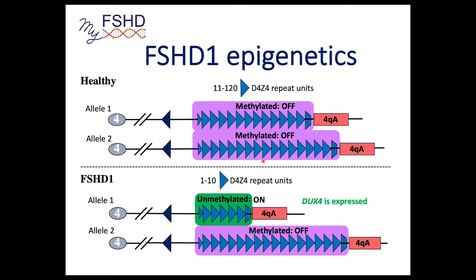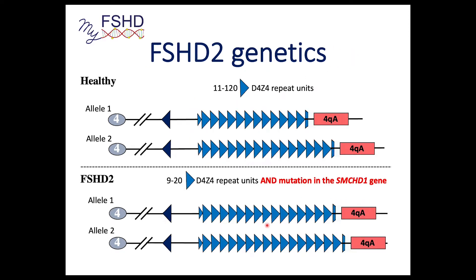These repeats are recognized by the cell as an off switch. In healthy individuals with more than 10 repeats, both chromosomes — remember you have one chromosome 4 from mom and one from dad — are recognized as regions that should be turned off. They are methylated and become epigenetically silenced. In FSHD1, the region is not recognized as repetitive. There is no off signal, so it remains unmethylated, allowing the DUX4 gene to be expressed. That's FSHD1.